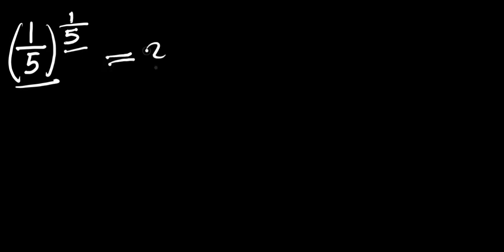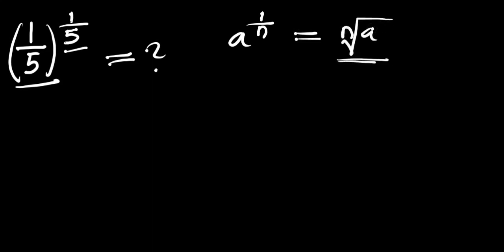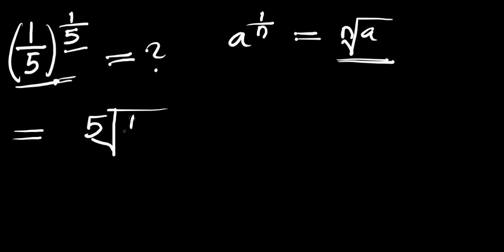What we are going to do is consider this identity: if we have a raised to the power of 1 divided by n, this equals the n-th root of a. We are going to apply this identity right here, which means this will give us the fifth root of 1 divided by 5.